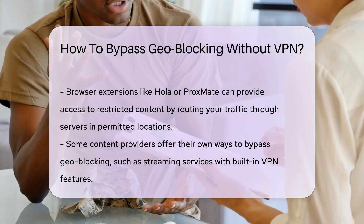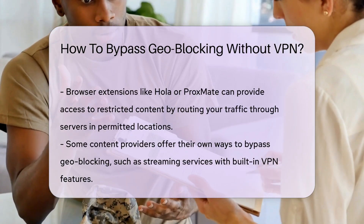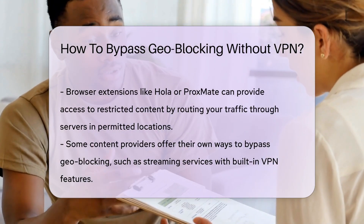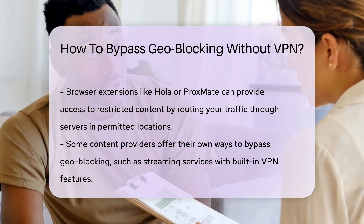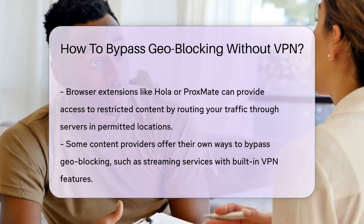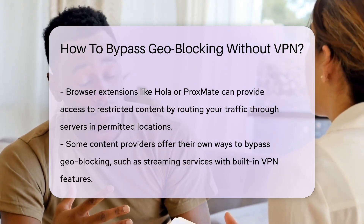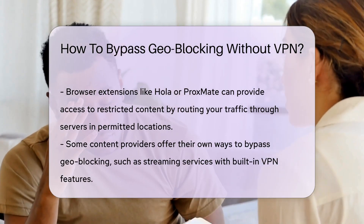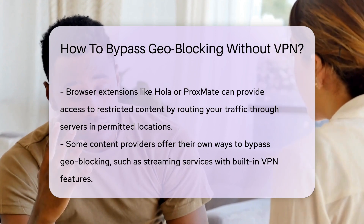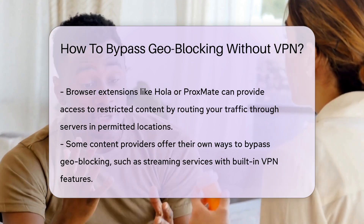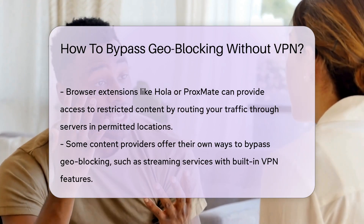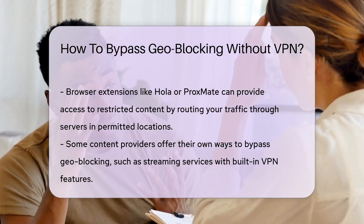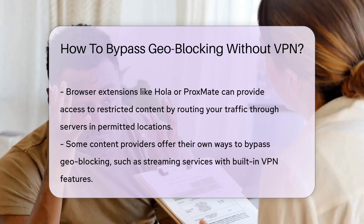Utilizing browser extensions like HOLA or Proximate can provide access to restricted content by routing your traffic through servers in permitted locations. Some content providers offer their own ways to bypass geoblocking, such as streaming services with built-in VPN features.